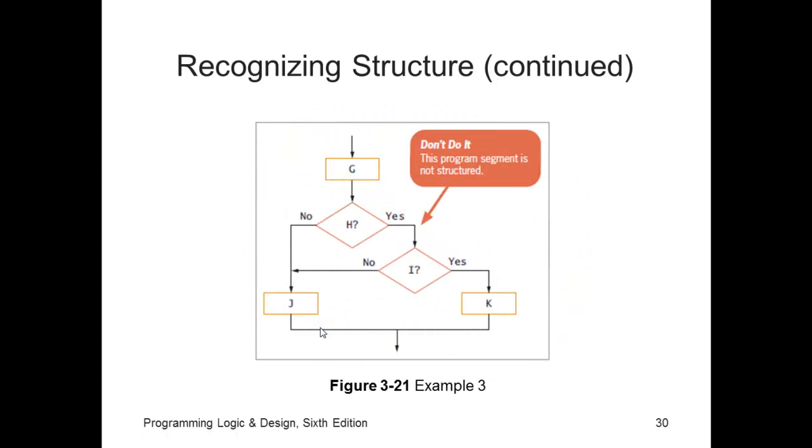Here's an example that is unstructured. Notice that we've got this flow arrow coming over here. We don't want that. That makes it unstructured. This decision has to have an arrow coming down. If the decision I evaluates to no, we want it to do process J, so we're going to create another process J.